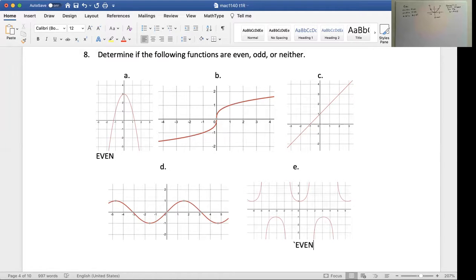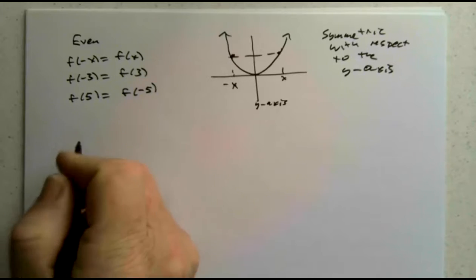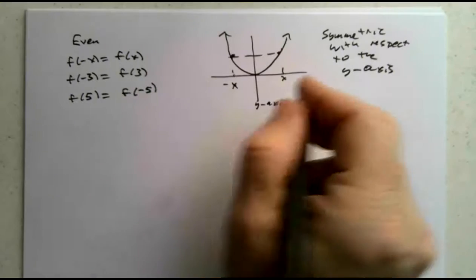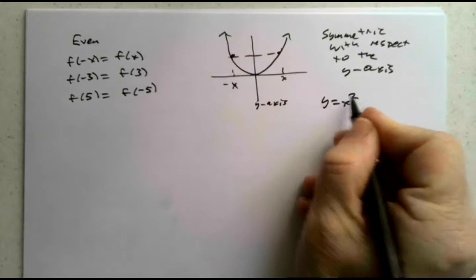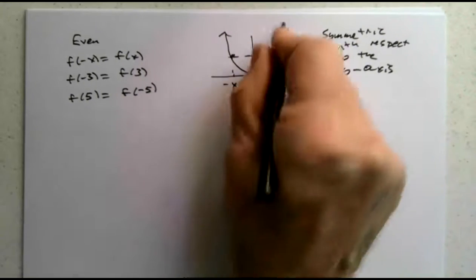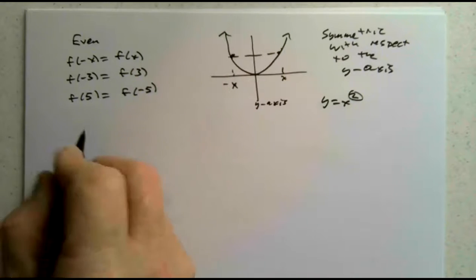So a graph that is symmetric with respect to the y-axis is going to be an even function. Now let's talk about an odd function — what does it mean to be odd? Our standard even function is y equals x squared. Even power — that's one of the reasons we give it that term.